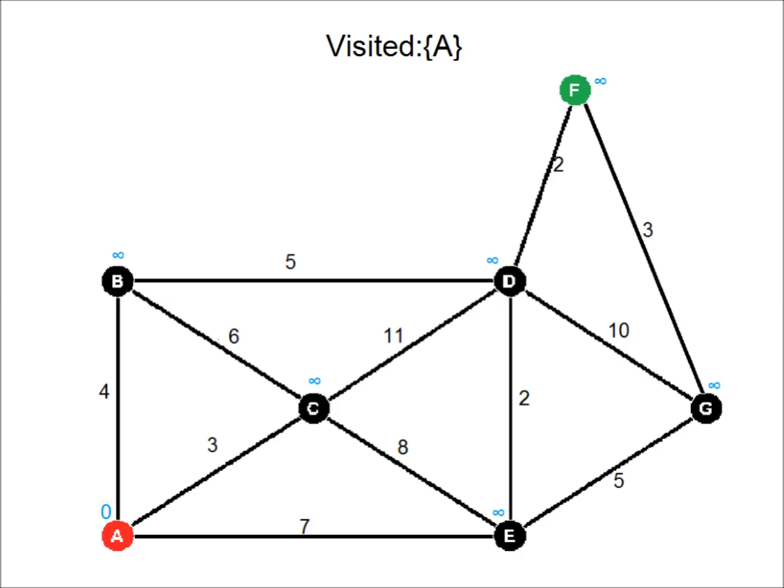So we start the algorithm running at A. A has three neighbors: B, C, and E. We need to calculate new values for B, C, and E by taking the distance from A to A, which is zero, and adding that to the edge weight between A and B, A and C, and A and E. So for B we get four, for C we get three, and for E we get seven. Since all these values are less than infinity, we update the distances at B, C, and E.